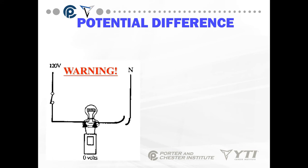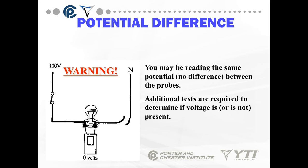In this first diagram, you could read the same potential — no difference between the probes — but there could still be voltage present. In this case, there's a broken neutral wire, meaning you still have 120 volts at the light bulb, but because there's no neutral coming down, you don't have a potential difference. You have full line voltage here, so if you touch that screw or terminal, you could get a shock, because there's still 120 volts between line and neutral.